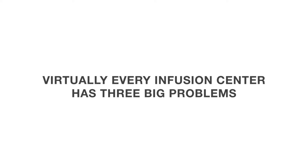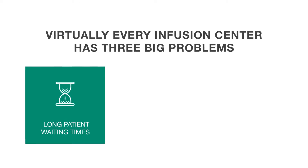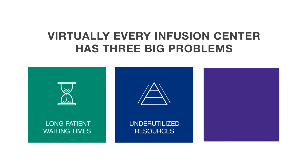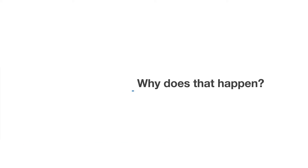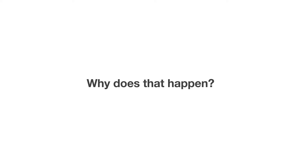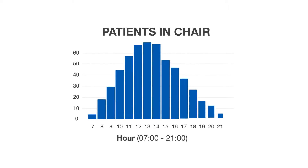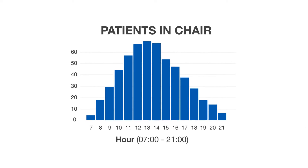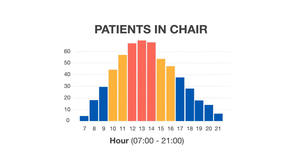Virtually every infusion center has three big problems: long patient waiting times, underutilized resources, and suboptimal nurse schedules. Why does that happen? Because almost every day starts with slow mornings and ends with slow evenings, with a chaotic period of time in the middle of the day.